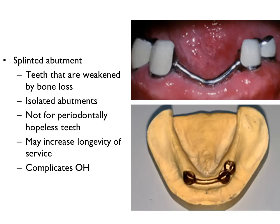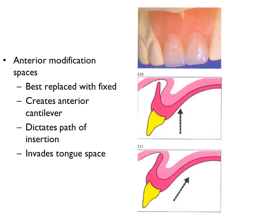Splinting is not used to support a tooth with an otherwise hopeless prognosis. Anterior modification spaces are best restored with fixed restorations. Anterior modifications will often dictate the path of insertion, invade the tongue space, and create an unstable cantilever that causes the RPD to rock.